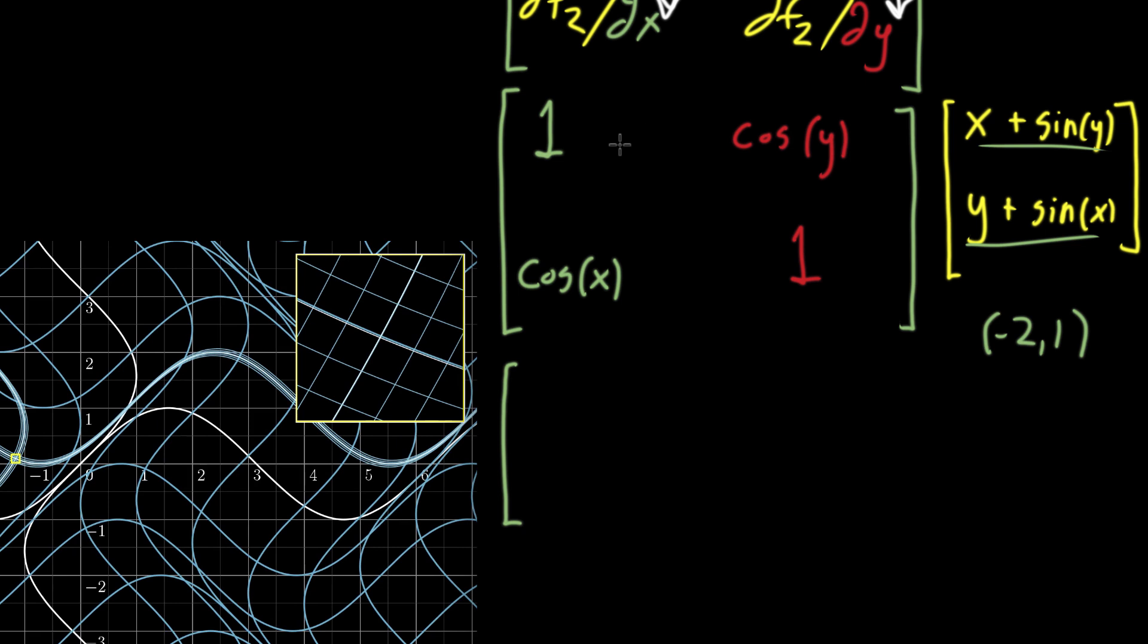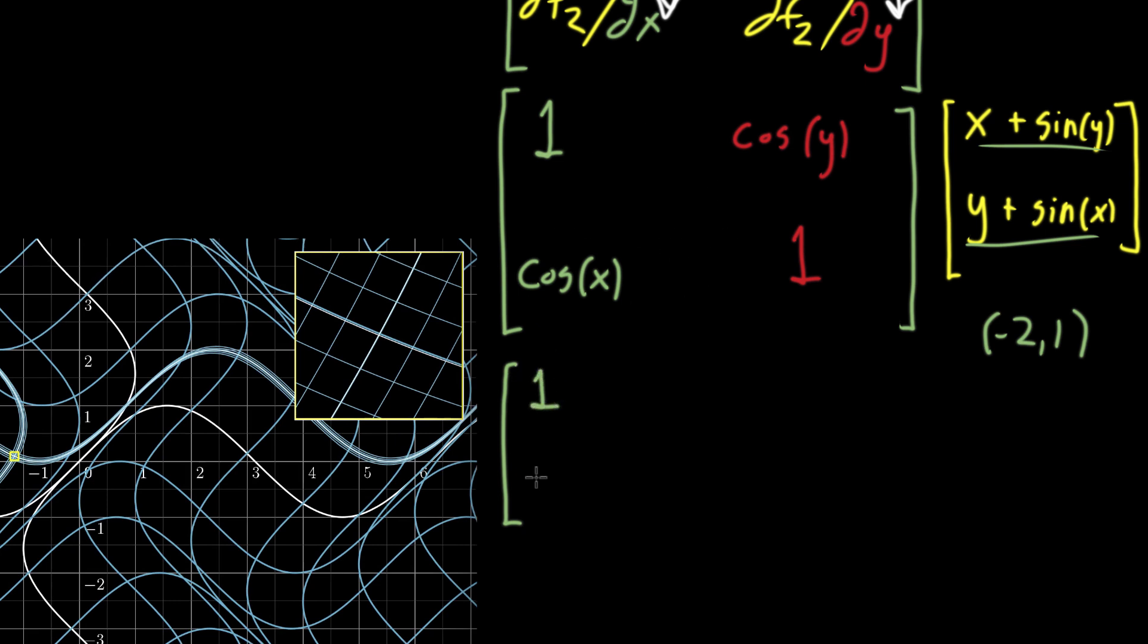That matrix as a function, kind of a matrix valued function, becomes 1, and then next we have cosine, but we're plugging in negative 2 for x. Cosine of negative 2. And if you're curious, that is approximately equal to, I calculated this earlier, negative 0.42 if you just want to think in terms of a number there.